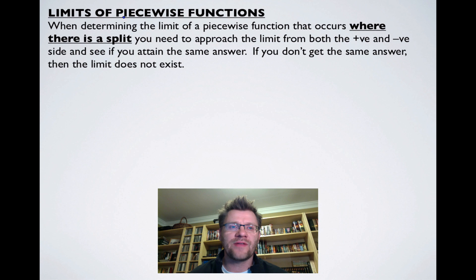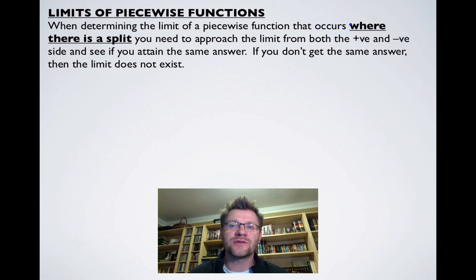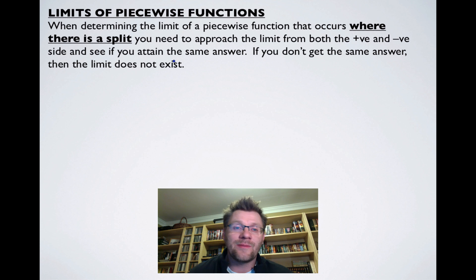Our final type of limit involves piecewise functions. When determining the limit of a piecewise function at a split point, you need to approach from both the positive and negative sides and check whether you attain the same answer. If you don't, then the limit does not exist.